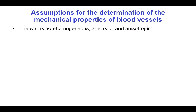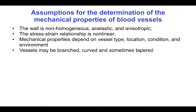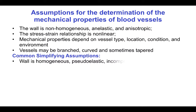Artery walls are non-homogeneous, anelastic, and anisotropic. The stress-strain relationship is non-linear, and the mechanical properties depend on vessel type, location, condition, and environment. Moreover, the vessels may be branched, curved, and sometimes even tapered. However, some common simplifying assumptions in the analysis of arterial mechanics include the assumption that the wall is homogeneous, pseudo-elastic, and incompressible. Occasionally, the wall is considered non-homogeneous with two separate layers.